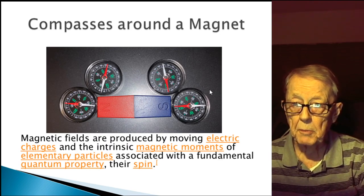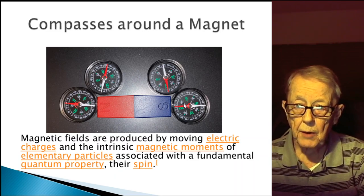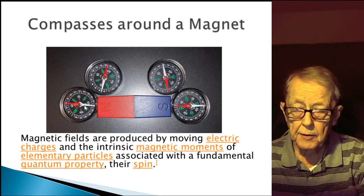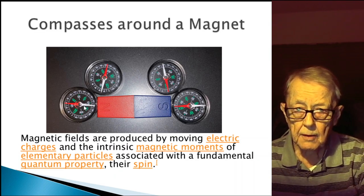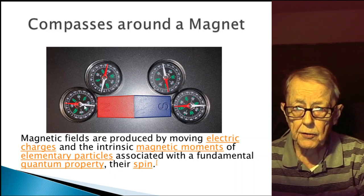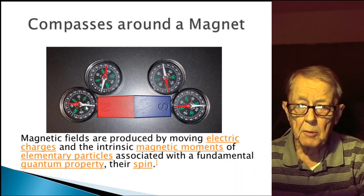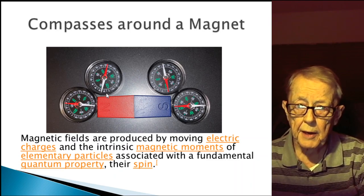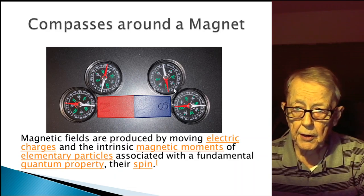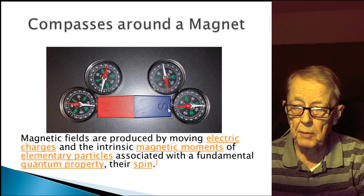I started with the magnet. I have four compasses around the magnet. The needle itself is a magnet. Generally speaking, you will find that the white southern end of the compass needle points to the north of the big magnet, and the north end of the compass needle points to the south end of the magnet.